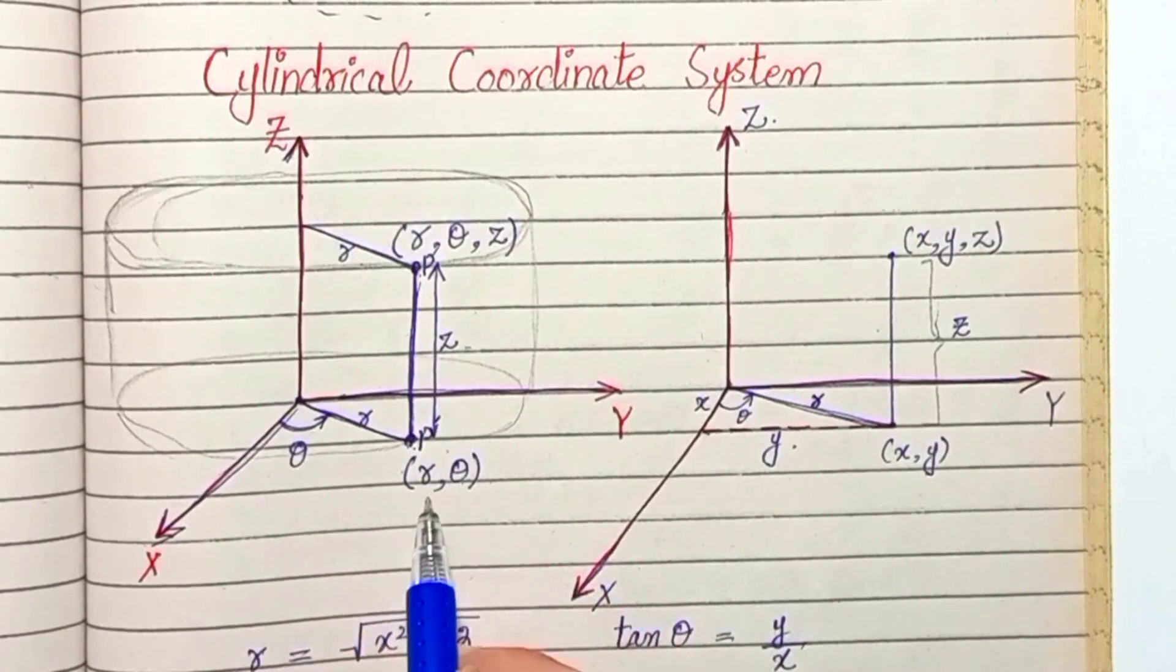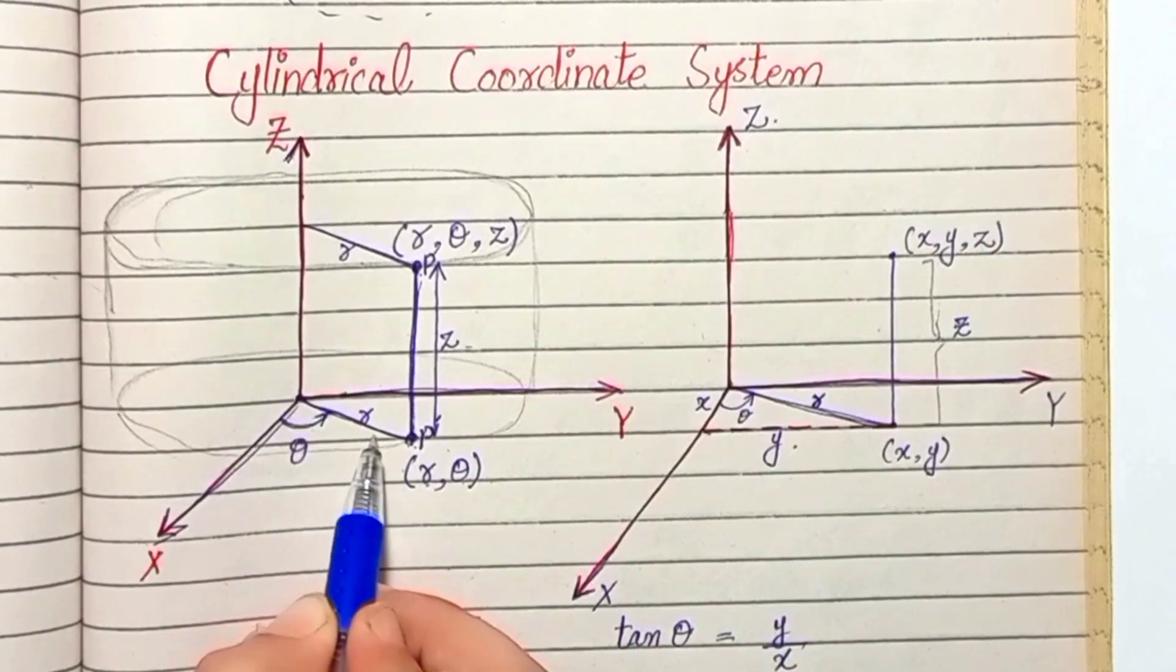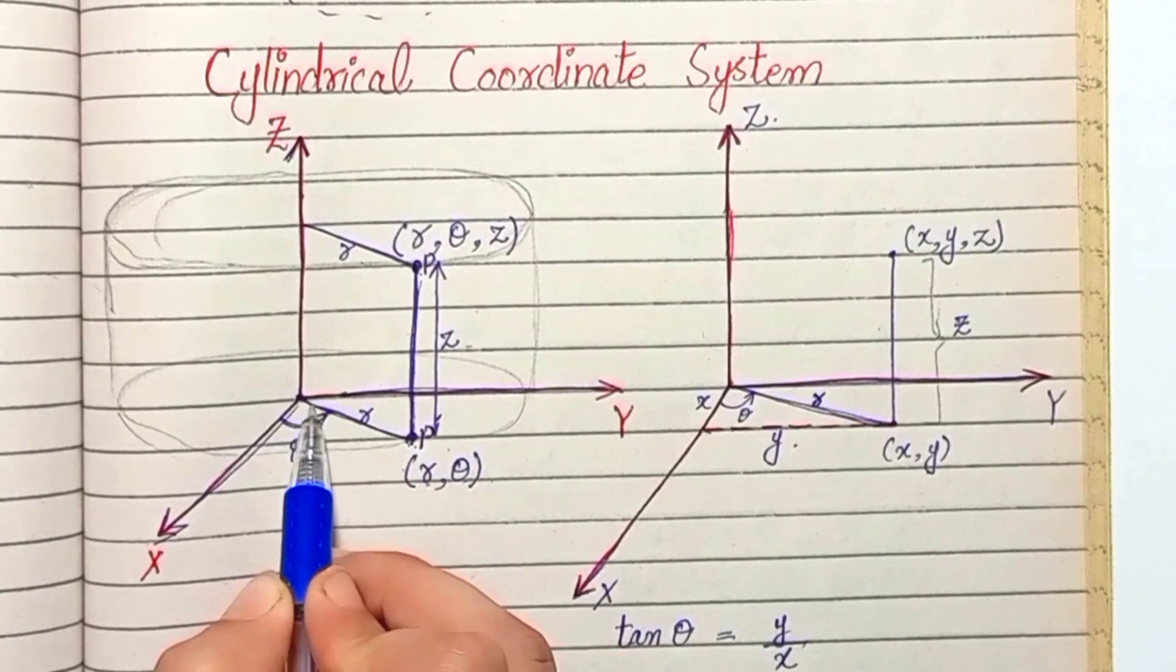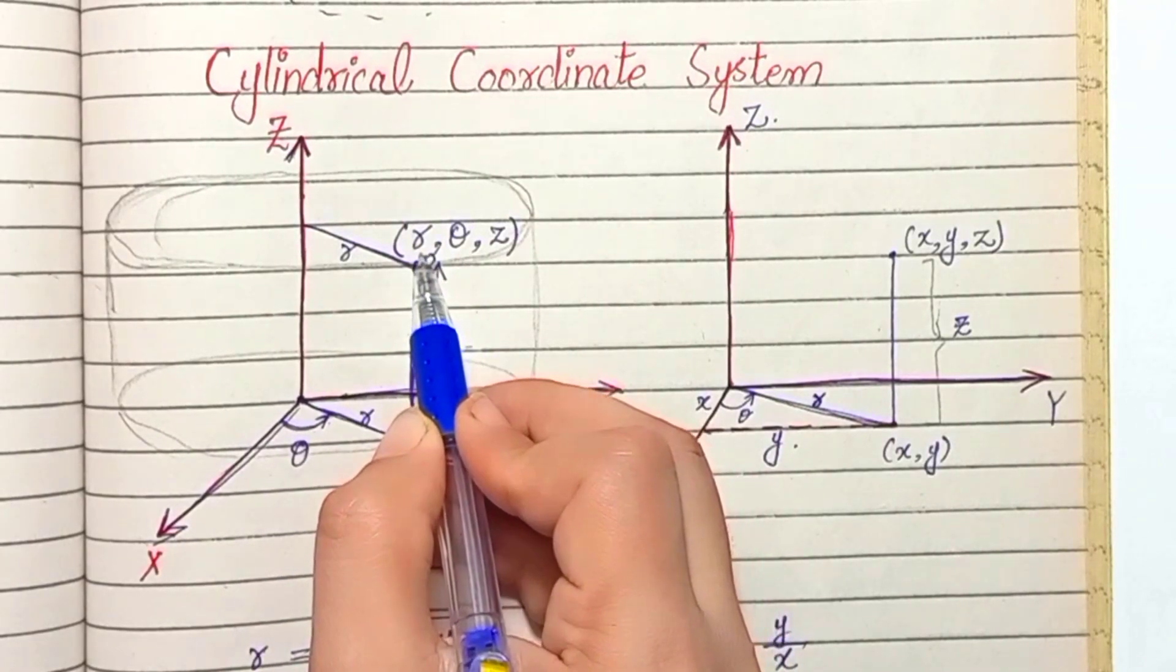We can define this shadow in terms of r and theta, where r is the distance of this point from the origin and theta is the angle subtended by this line from the x-axis. And this point we define